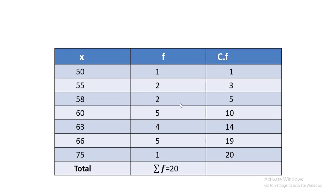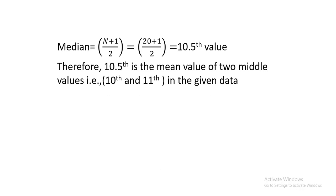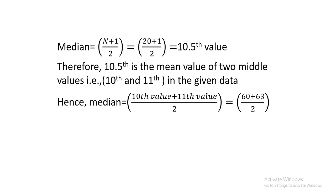The first step, as I told you, is to find out the cumulative frequency less than. The total frequency is 20. The next step is the formulation: 20 plus 1 divided by 2 gives me the 10.5th value. We are going to look for this value in the cumulative frequency table. So 10.5 is the mean value of two middle values — the 10th and 11th in the given data. Therefore, the median value will be the 10th value plus 11th value divided by 2, that is 60 plus 63 divided by 2, which equals 61.5.